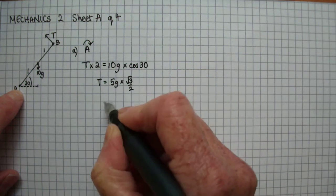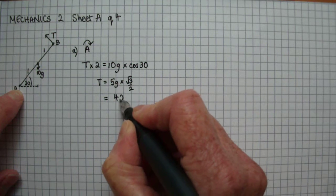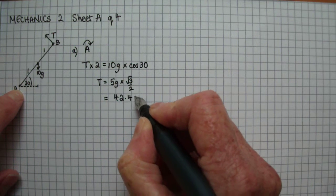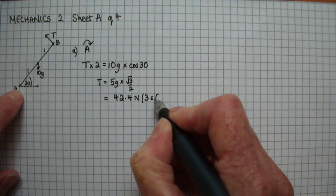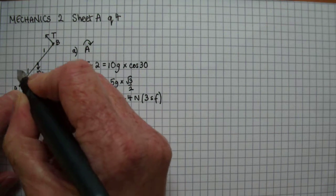Which is root 3 over 2, and so it equals 42.4 Newtons to three significant figures. Now to find the normal reaction R, we'll resolve vertically.